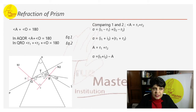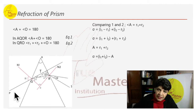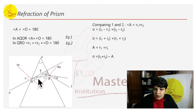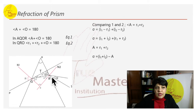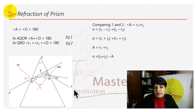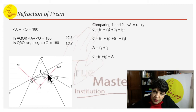Refraction through a prism: ray PQ strikes at point Q. Instead of going straight, it bends and travels along QR (entering the denser prism medium). When it strikes at point R, the medium changes again and the ray travels out as RS, bending further. This is the angle of deviation — the ray was supposed to go straight but has been diverted along the path PQRS.